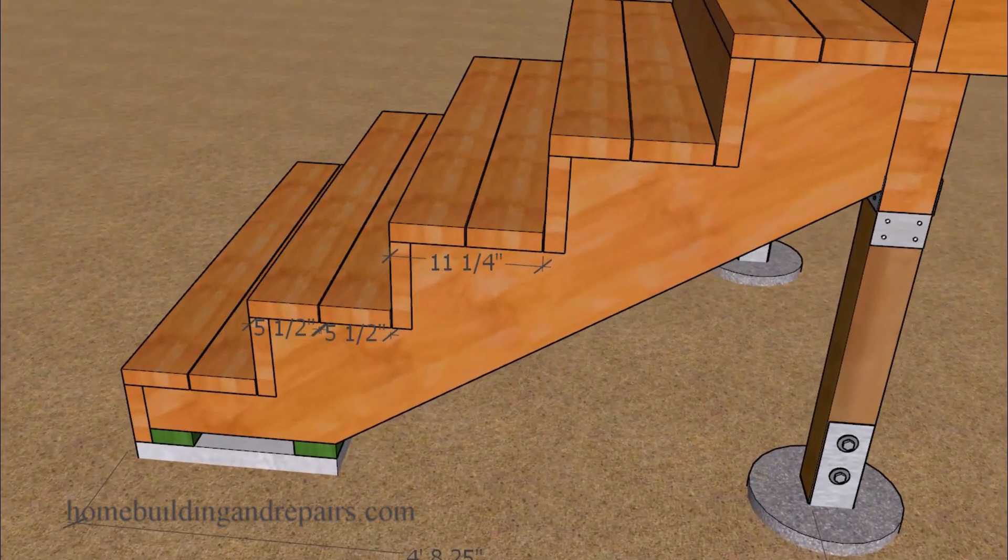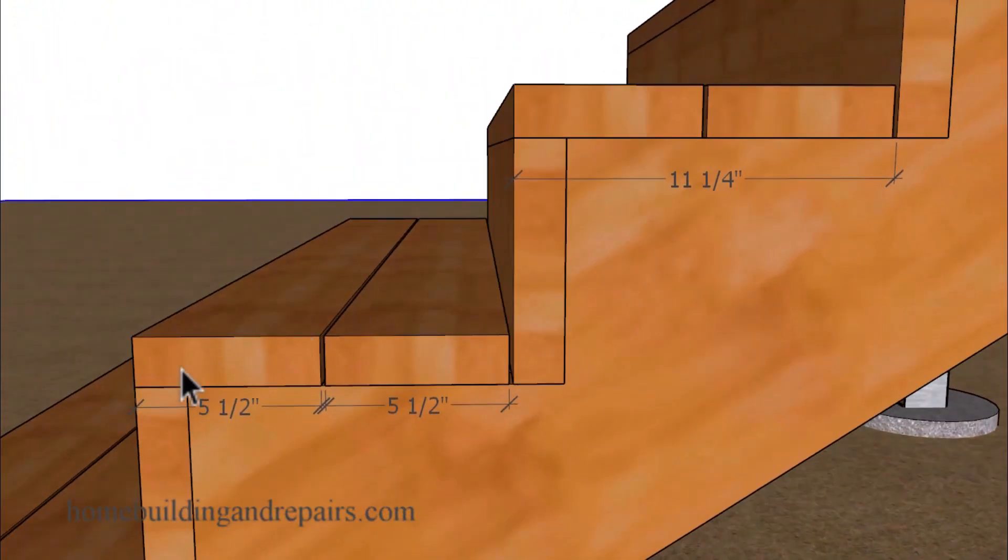And that's going to allow us to use construction standard lumber, 5 1/2 inches wide with a 1/8-inch gap, 5 1/2 inches, and then another 1/8-inch gap.